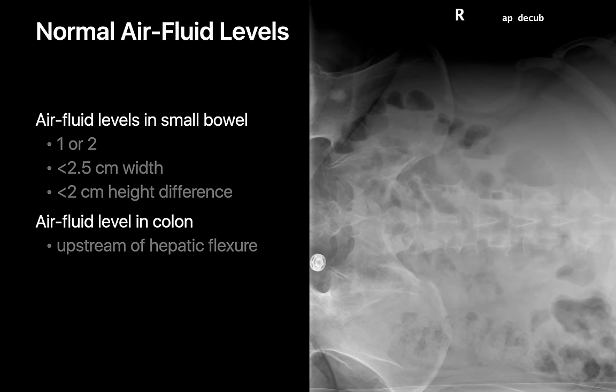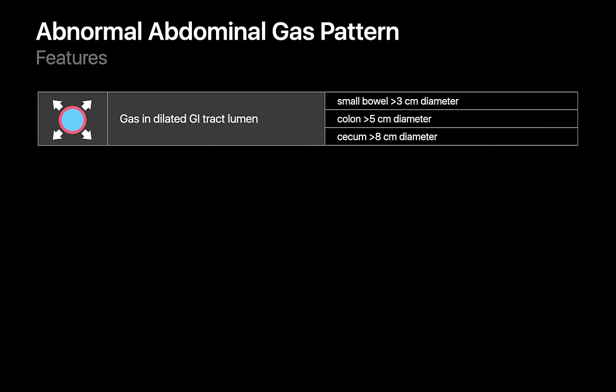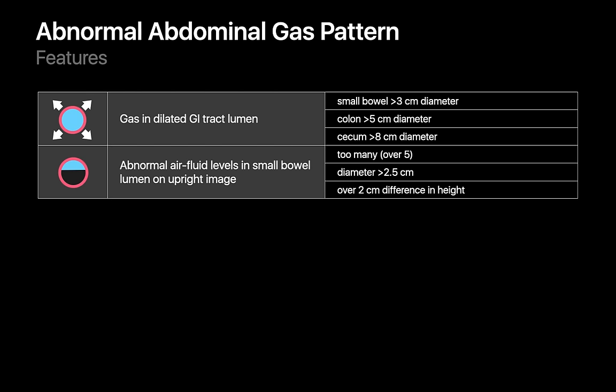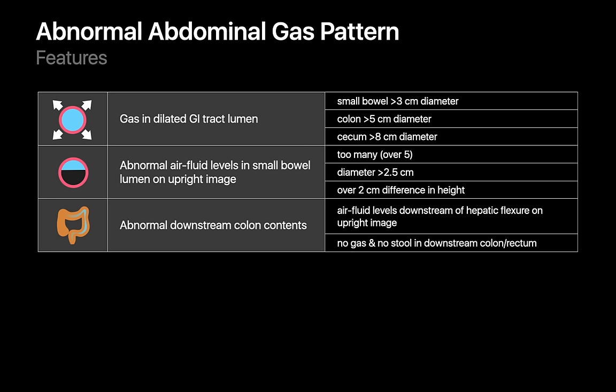If those features characterize a normal abdominal gas pattern, what constitutes an abnormal pattern? It's usually not normal to have dilated gas-filled GI tract — meaning gas-filled small bowel over three centimeters diameter, colon over five centimeters diameter, or cecum over eight centimeters diameter. It's usually not normal to encounter too many small bowel air-fluid levels, too wide in diameter, or with levels spaced over two centimeters apart in height. It's also not normal to encounter air-fluid levels in colon downstream from the hepatic flexure, or an absence of gas and stool in colon downstream from the hepatic flexure, which can suggest the downstream colon and rectum are entirely empty and collapsed.